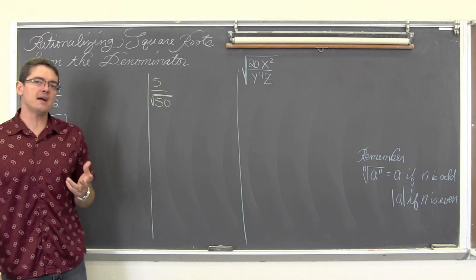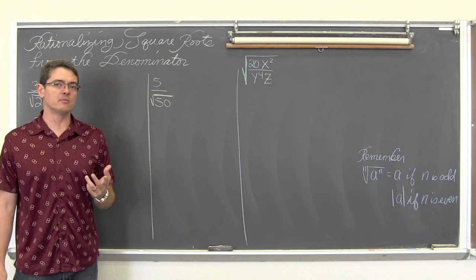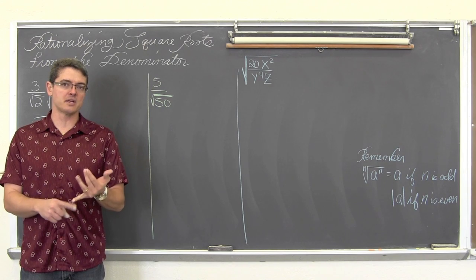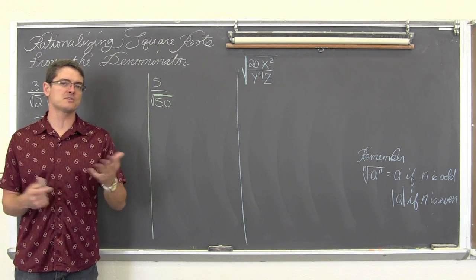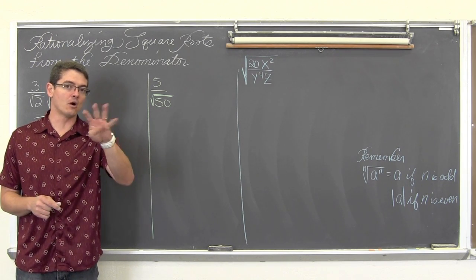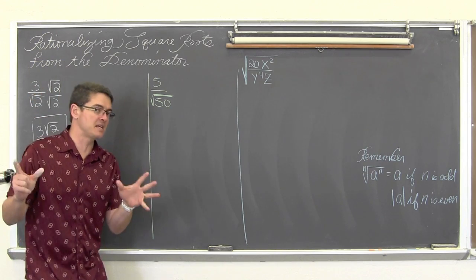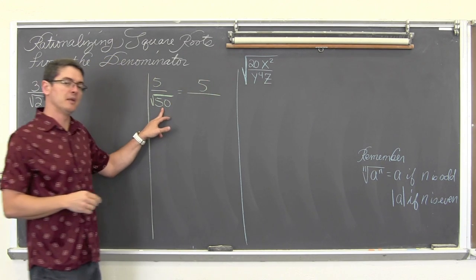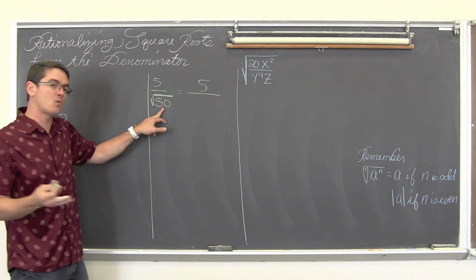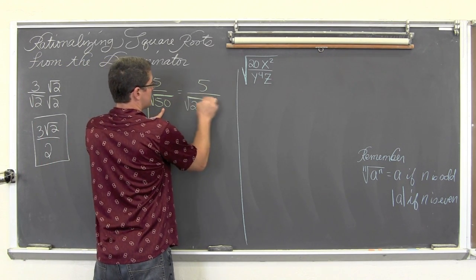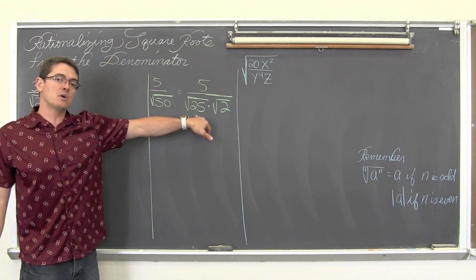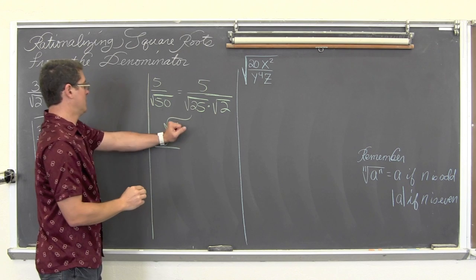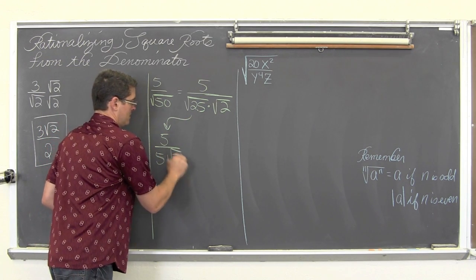When you simplify radicals, you try to factor the values inside the square root symbol with factors which themselves are perfect squares. There is a perfect square in 50. Our perfect squares are 4 (2 squared), 9 (3 squared), 16 (4 squared), and 25 (5 squared). So I am going to rewrite this as 5 over the square root of 25 times the square root of 2. The square root of 25 is 5, so we come down to 5 over 5 times square root of 2.